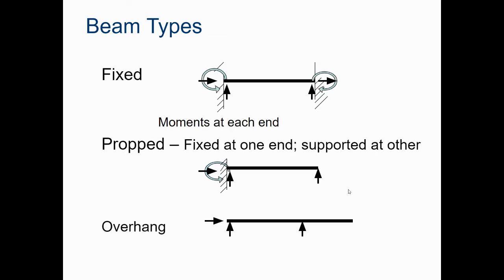We also have fixed beams, which are held in place at two ends. A propped beam, which is fixed at one end and then supported at the other. And then we have an overhanging beam, which you can see in the lower picture there, has the force on the right-hand side pushing up, and then the beam extends past that force.